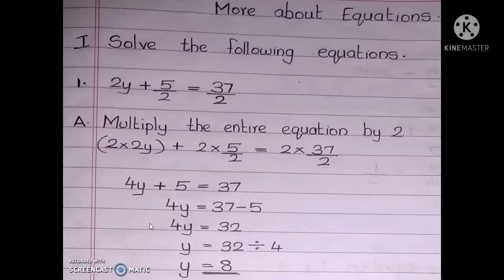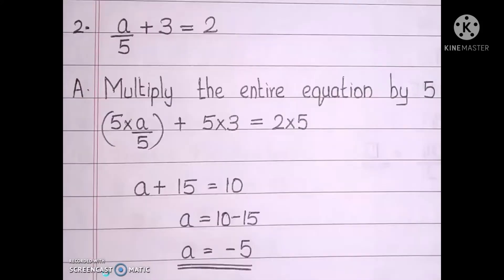Now question 2: a by 5 plus 3 equal to 2. Which is the denominator here? 5. So you will multiply the entire equation by 5. Each and every term I am multiplying by the denominator: 5 into a by 5, plus 5 into 3, equal to 2 into 5. Here you can see 5 and 5 get cancelled, so what is remaining? a. 5 into 3 is 15. 2 into 5 is 10.